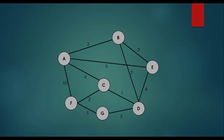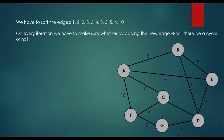Consider a graph with vertices A, B, C, D, E, F, G — 7 vertices — and undirected edges with weights 2, 3, 1, 2, 4, 6, 10, and so on. We would like to find the minimum spanning tree. First we sort the edge weights: 1, 2, 2, 3, 3, 4, 5, 5, 5, 6, 10. On every iteration we check whether adding a new edge would form a cycle.